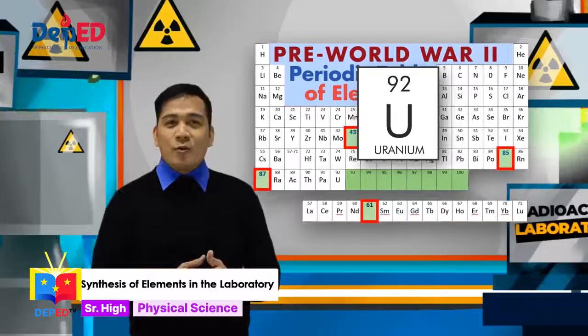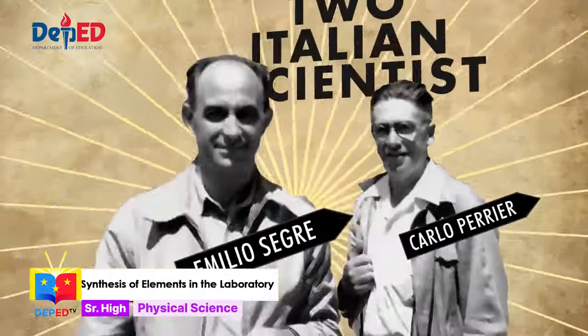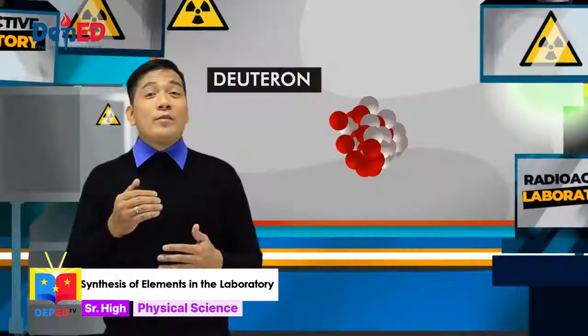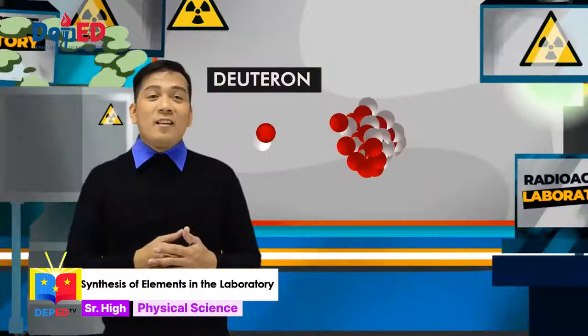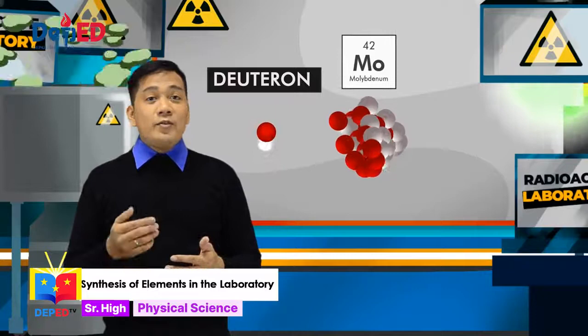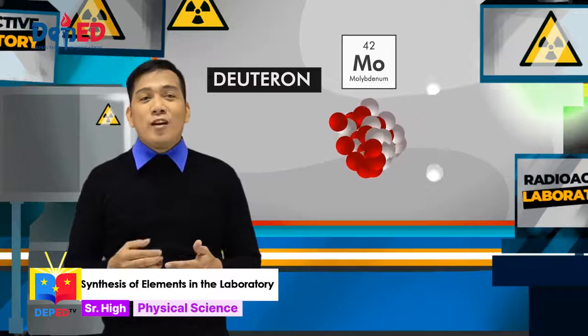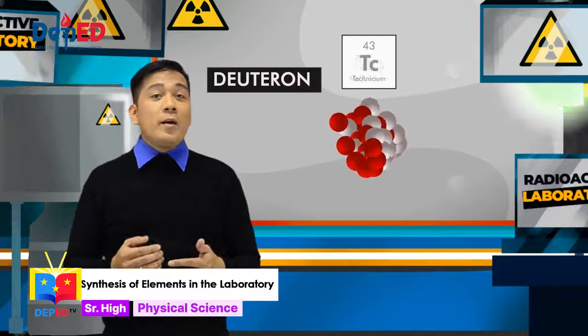In 1937, two Italian scientists, Carlo Perrier and Emilio Segre, discovered element number 43. It was named technetium. The name was derived from the Greek word technitos, which means artificial. Because technetium was the first element to be synthesized in the laboratory. What they did was they bombarded molybdenum with deuteron. Deuteron is an isotope of hydrogen that has one proton and one neutron. When this deuteron hits molybdenum, its proton is attached in the nucleus and neutrons are emitted. The addition of one proton into the nucleus of molybdenum turns it into element 43 or technetium.